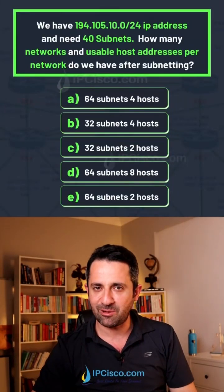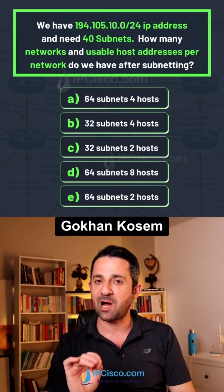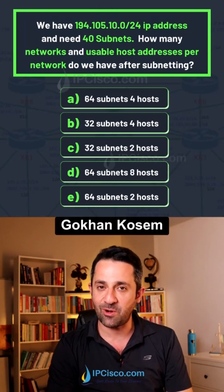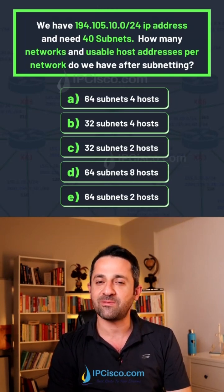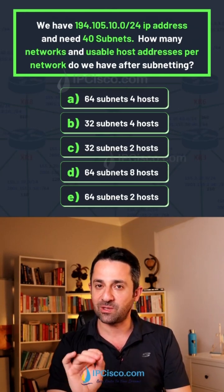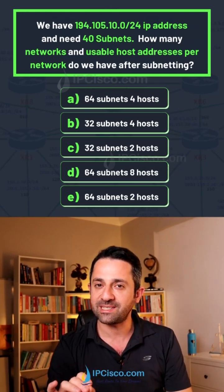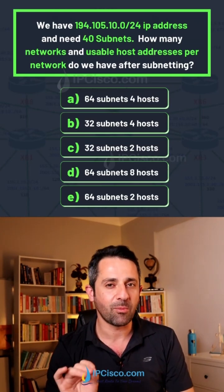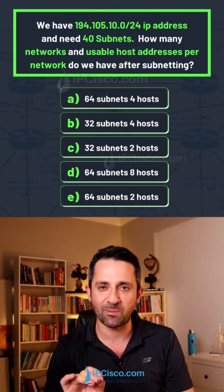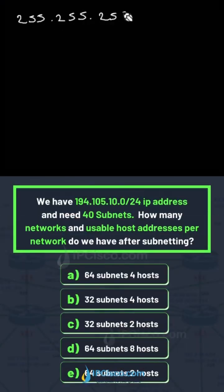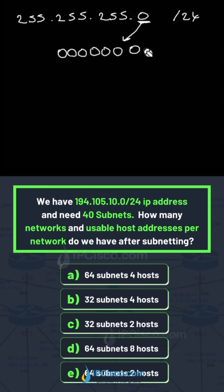How many networks and usable host addresses after subnetting? Your IP is 194.105.10.0/24 and you need at least 40 subnets. To solve this subnetting question, we will focus on borrowed bits from the host bits. I'm writing our subnet mask here — it is /24 — and I will write the last octet in binary format.